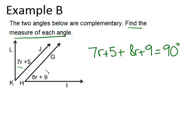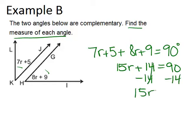I can solve this equation using my algebra skills. Combine like terms with the r's and the numbers on the left side of the equation first. So you end up with 15r plus 14 equals 90. Keep solving by subtracting 14 from both sides, and you end up with 15r equals 76.